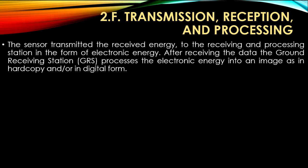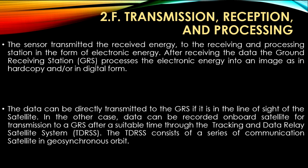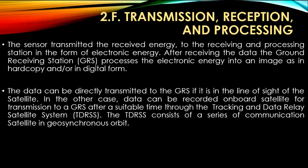The data can be directly transmitted to the GRS if it is in the line of sight of the satellite. In other cases, data can be recorded on-board the satellite for transmission to the GRS after a suitable time through the Tracking and Data Relay Satellite System, TDRSS.